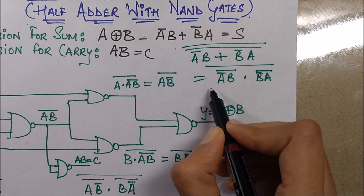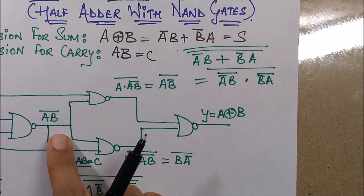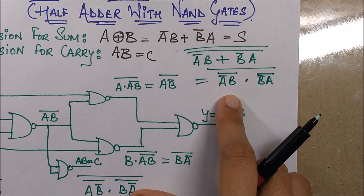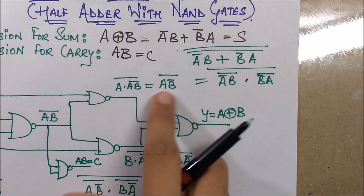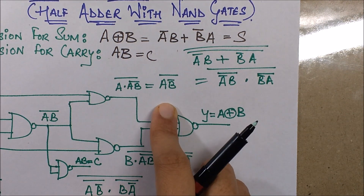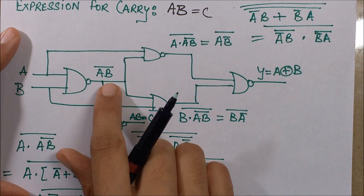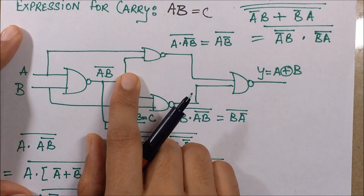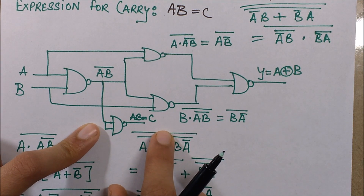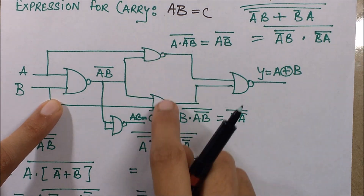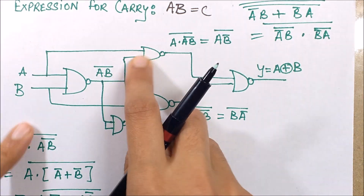Essentially I need to form this, and in order to form this I require AB bar. You will quickly be able to see how this is formed, and you will be able to visualize that this is required and is somehow being formed by AB bar. So we will discuss how this is formed, but for forming this we require AB bar. I first form AB bar, then to get the carry I negate it once again and the carry is delivered. Then I use two more NAND gates with one input as AB bar and A to one, and B to the other.